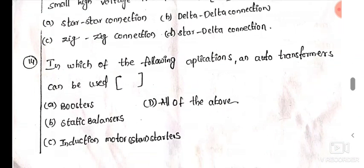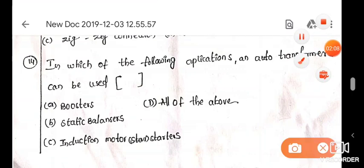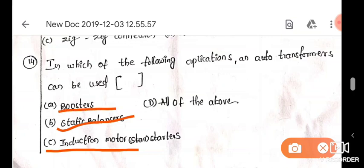In which of the following applications an auto transformer can be used? Auto transformer can be used as a starter, induction motor starters, 14, and you can use as a static balancer and booster. The answer is all of the above, 14D.